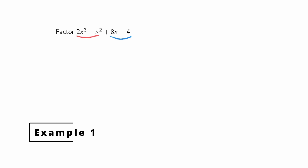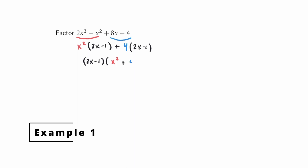So what we will do is factor the greatest common factor from each pair. From the first two terms, the GCF is x squared, so we factor that out and we're left with 2x minus 1. From the second pair of terms, we factor out the GCF which is 4, and we're left with 2x minus 1. So now we have two terms, and each term has a common factor of 2x minus 1. We factor out that binomial factor, leaving x squared from the first term and 4 from the second.